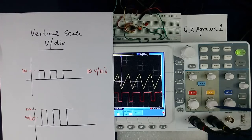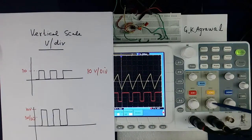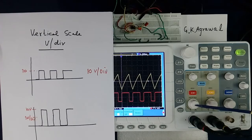So there are two knobs here for both channels. This vertical scale control will be different. You can select separately. One may be 10 volt per division, another may be 5 volt per division.